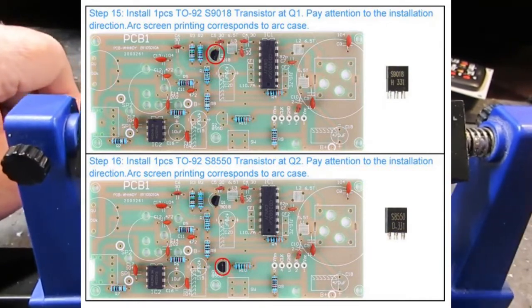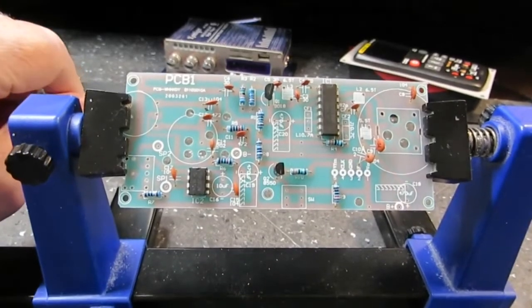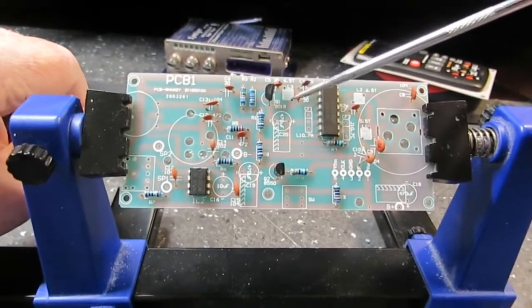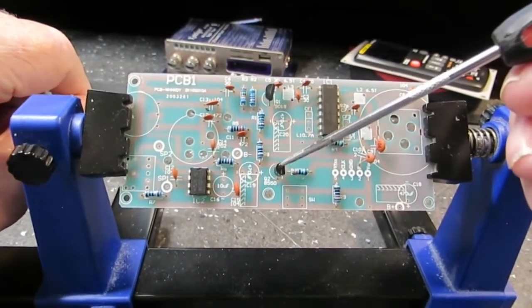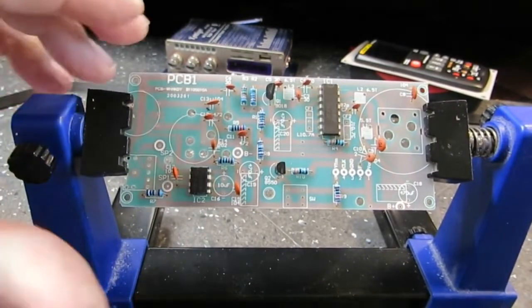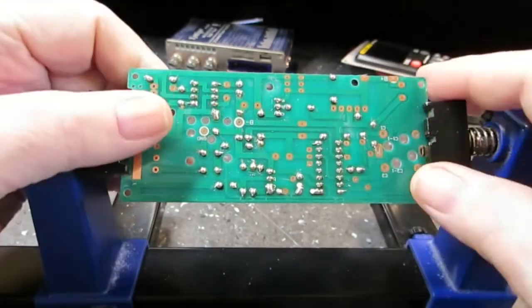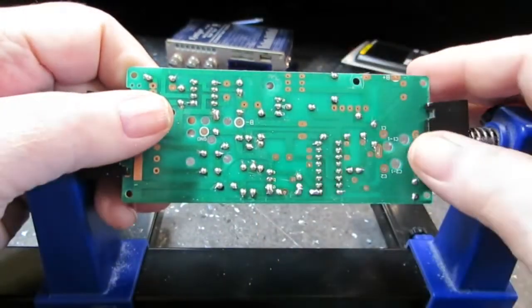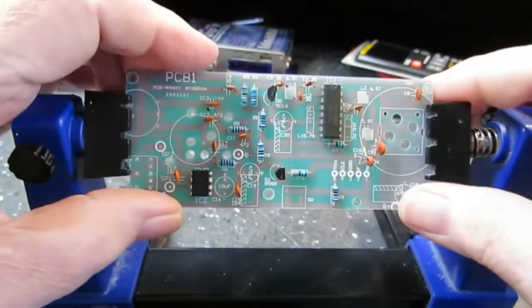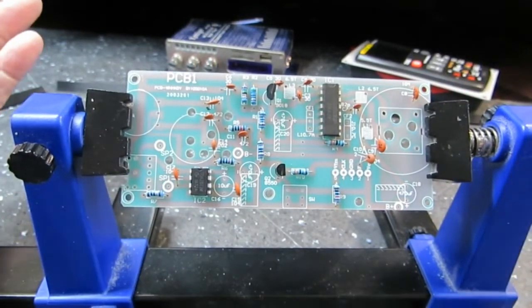Step 15 and 16 is done. Now we have Q1, which is this S9018 here. And Q2, which is the S8550 here. Both, as you can see, soldered in. There and there. That is a bridge there. It's a design bridge, I guess is what you would call it. But those are both in now. And we'll proceed on to the next step.